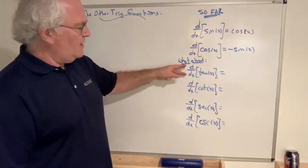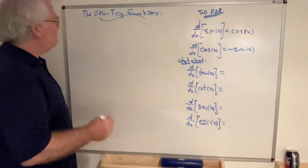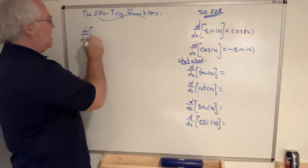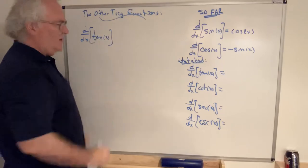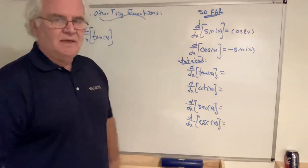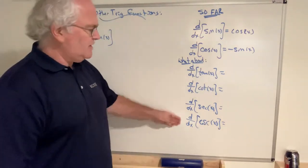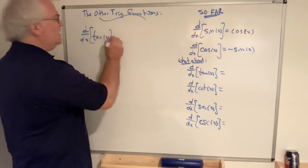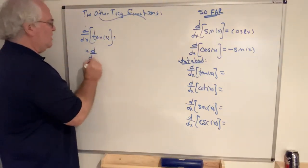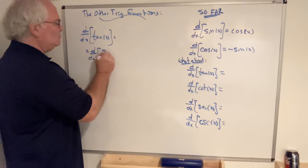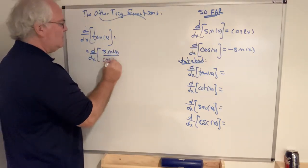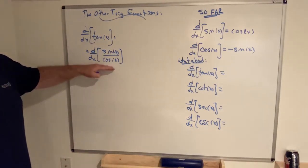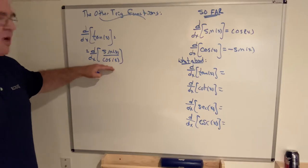Now we know how to find the derivative of tangent, because as any decent trigonometry student knows, we can take all four of these functions and express everything in terms of sine and cosine. Once you do that, things typically become much easier — and that's what happens here. This is equal to the derivative with respect to x of sine x over cosine x. Now, straightforward: apply the quotient rule.